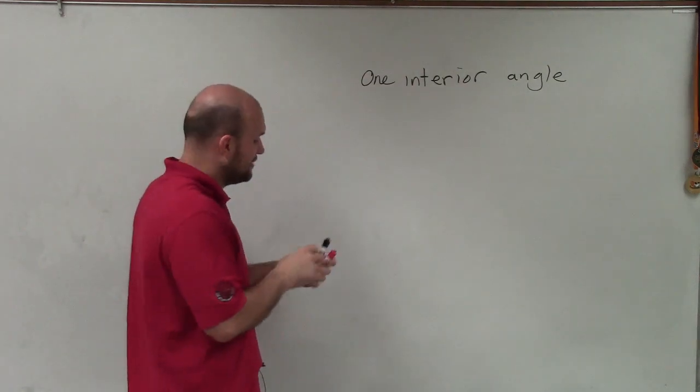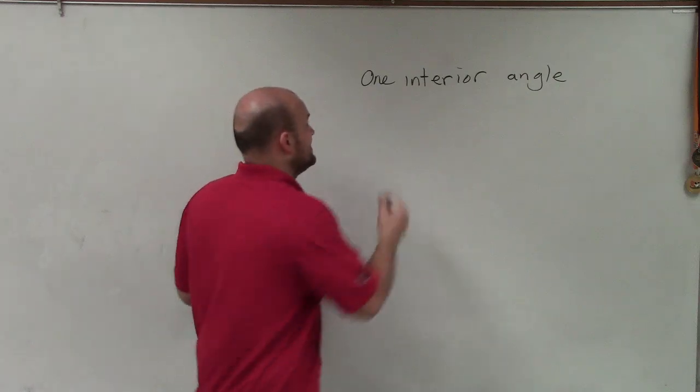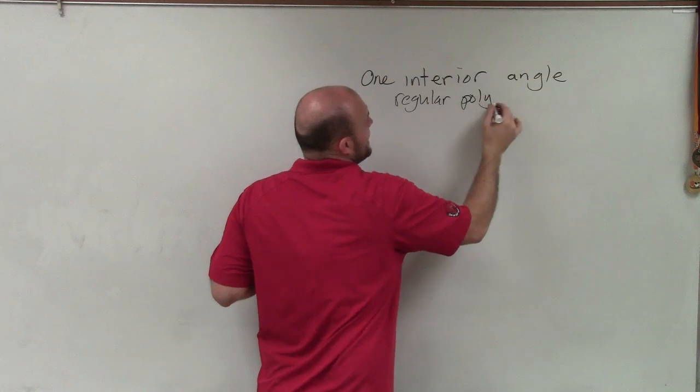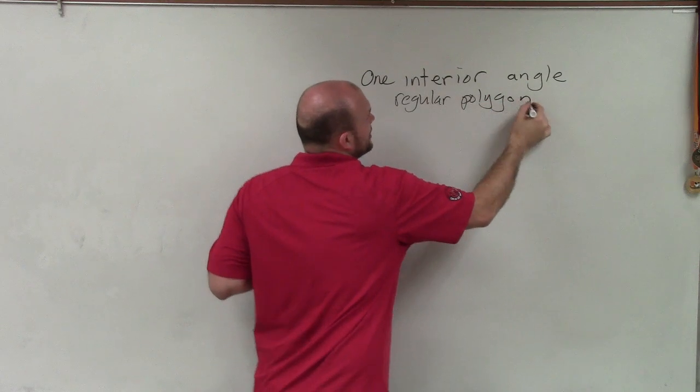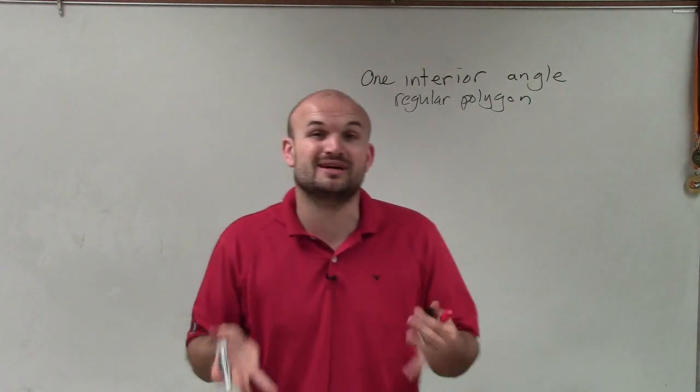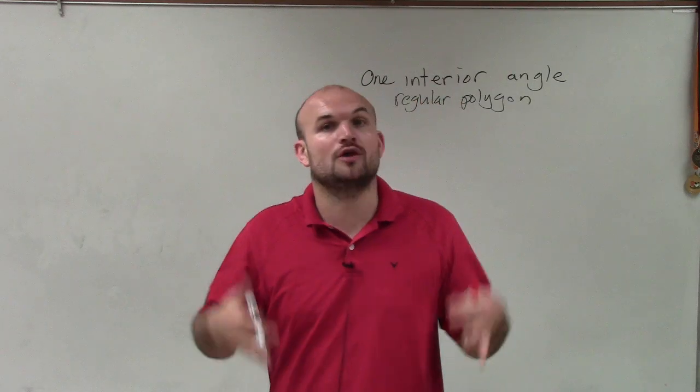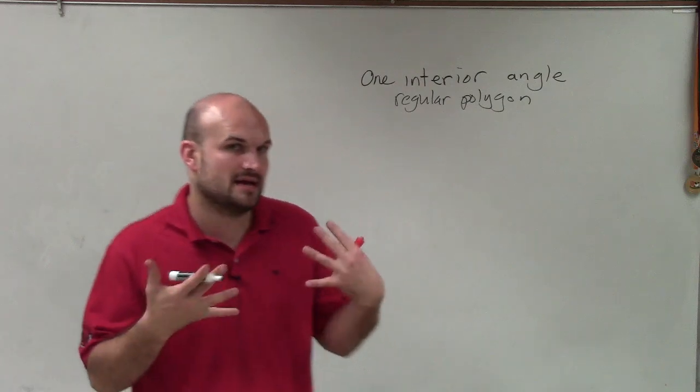Now the main important thing, to find one interior angle, this is all going to be based off a regular polygon. So again, we've got to make sure that our polygon that we're going to be working with is going to be regular. That means all the sides are exactly the same, as well as all the angles are going to be exactly the same measurement.